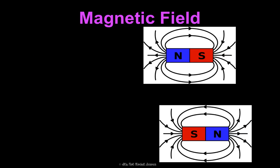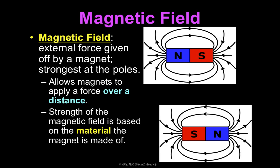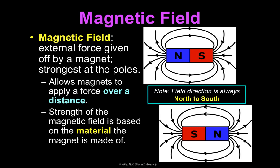So that field that's surrounding magnets, that's that external force that you feel. That's that magnetic field. It's what's given off, and it's strongest at the poles. It allows magnets to apply a force over a distance like we mentioned previously. The strength of the magnetic field is based on the material the magnet is made of. So some materials are stronger than others. And what you may have noticed looking at this picture is that the direction of the field is always north to south. So notice these arrows. It's coming out of the north end and towards the south end, coming into the south end. Same here, out of the north end and into the south end.